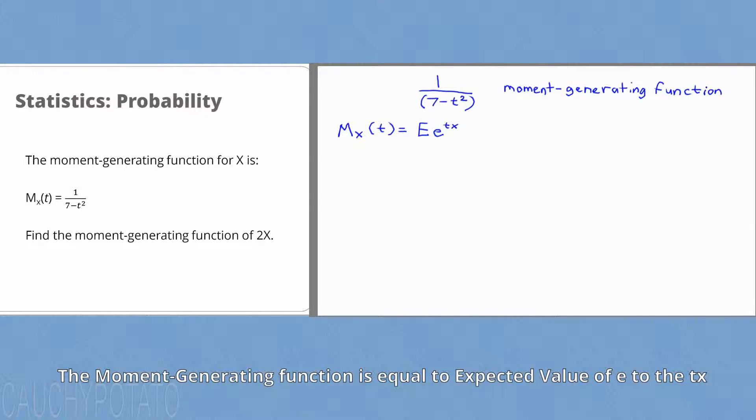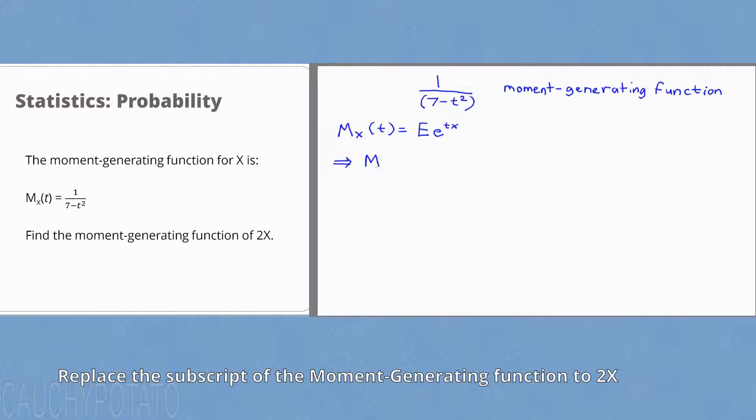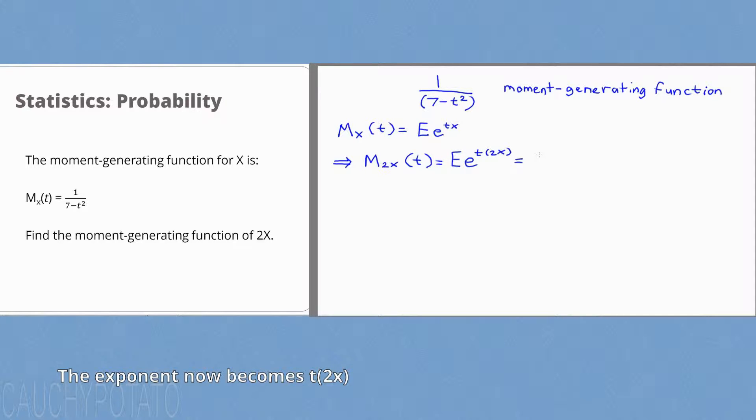So we want the moment generating function of 2x. Replace the x with a 2x. Expected value of e to the t times 2x. Move the brackets to enclose 2t.